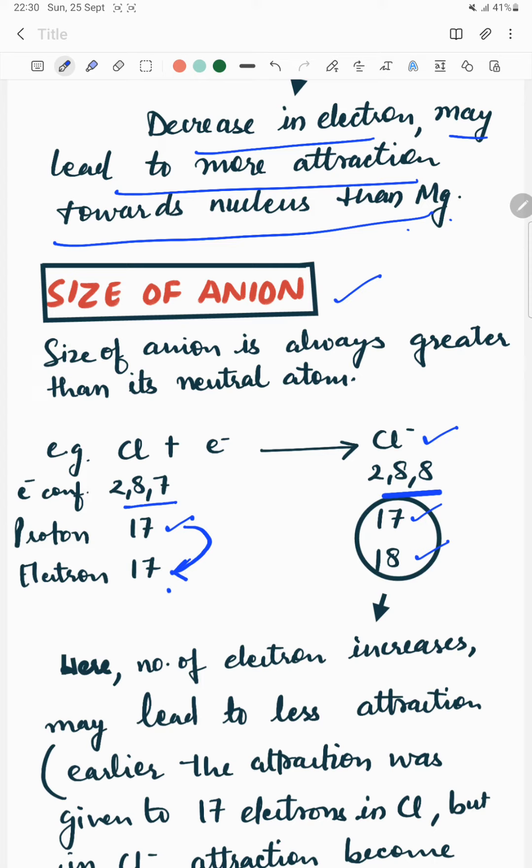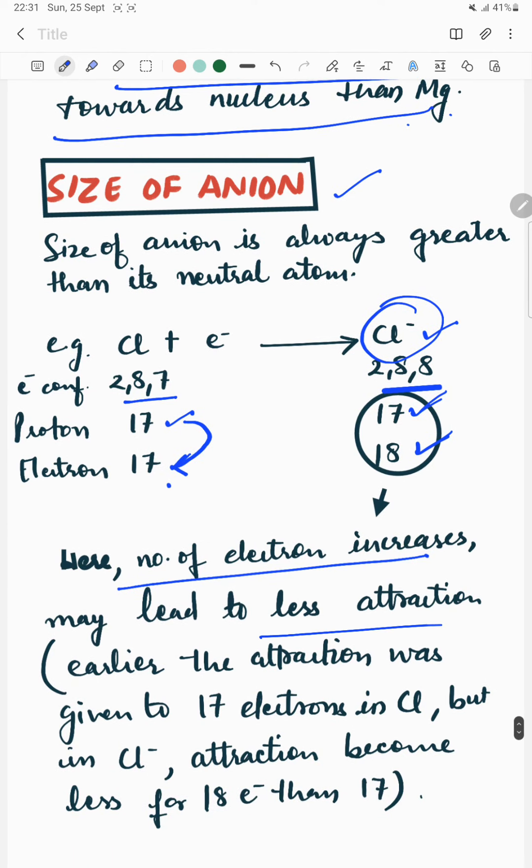So in case of chlorine, 17 protons required to attract 17 electrons, but in chloride ion, 17 protons have to attract 18 electrons. So now the number of electrons increases, may lead to less attraction, and less attraction means larger size.